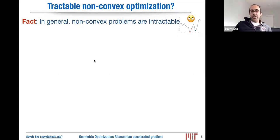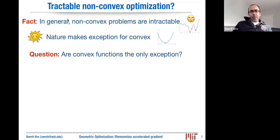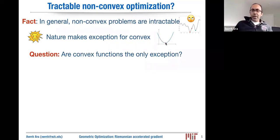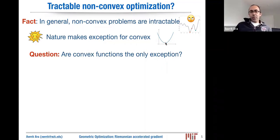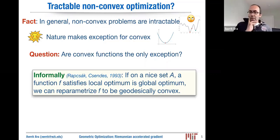As everybody who does optimization knows, in general, non-convex problems are intractable. It's very easy to construct simple-looking non-convex optimization problems that are harder to solve than NP-hard problems. We know that non-convex problems are intractable, and nature has made an exception for convex function problems — essentially unique optimum. The rhetorical question is: are convex functions the only such exception nature has made for us?